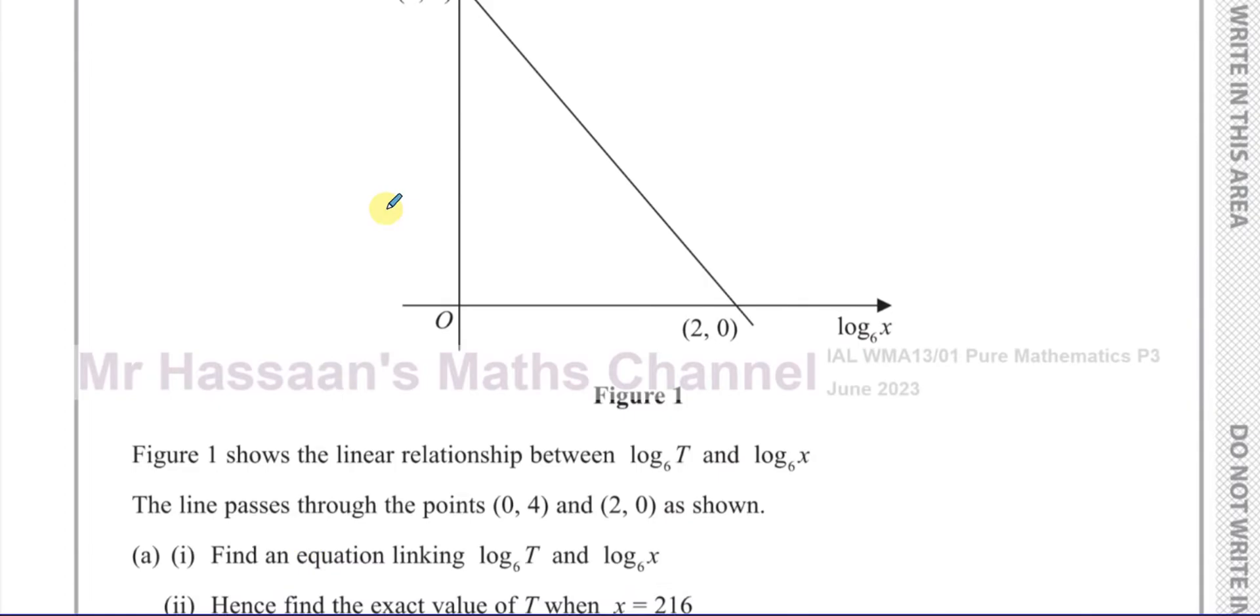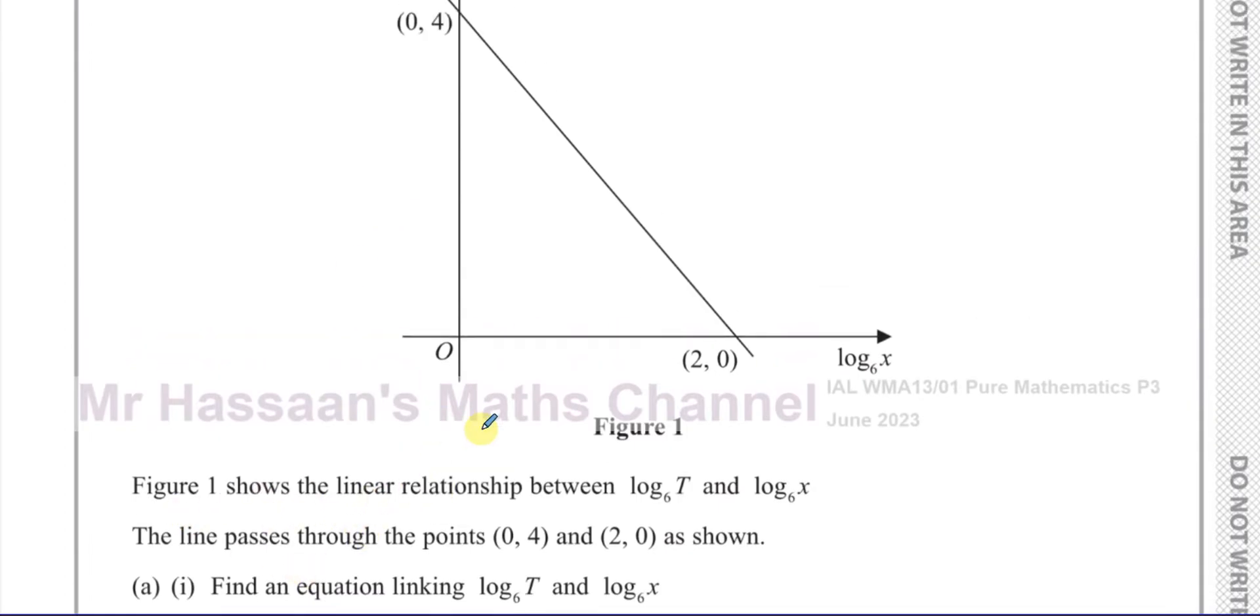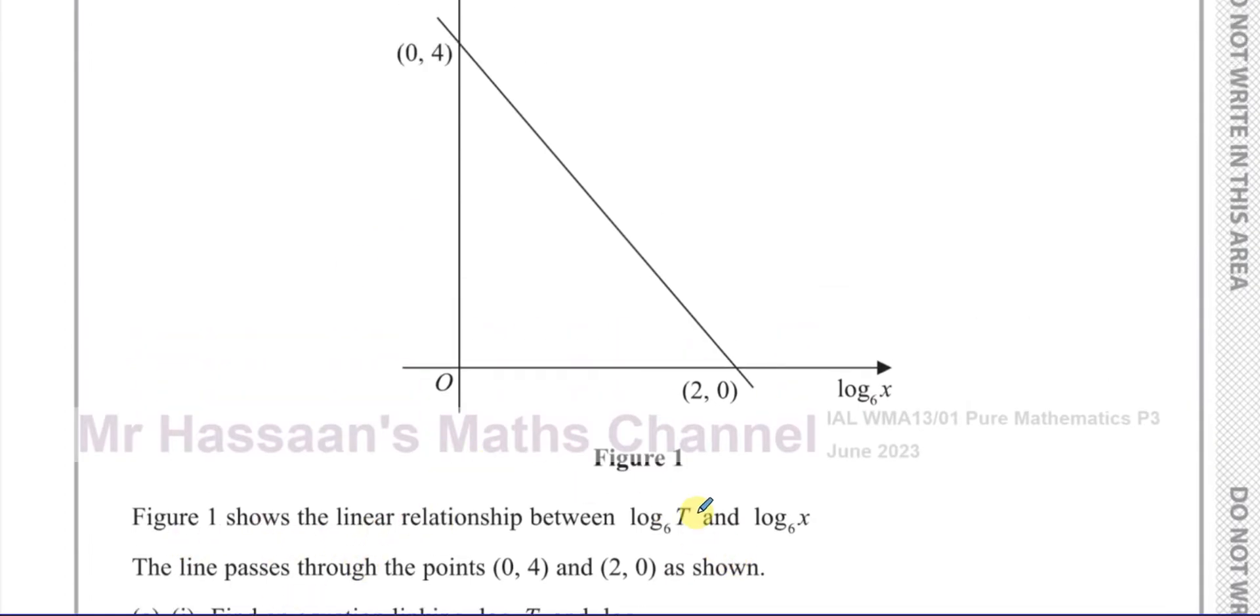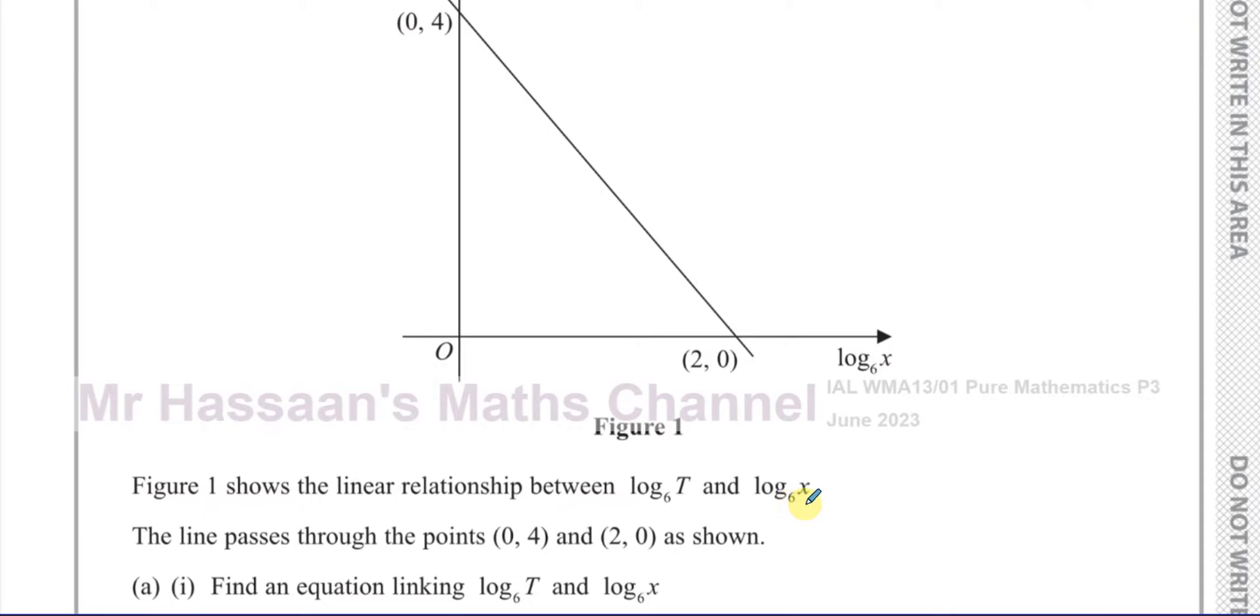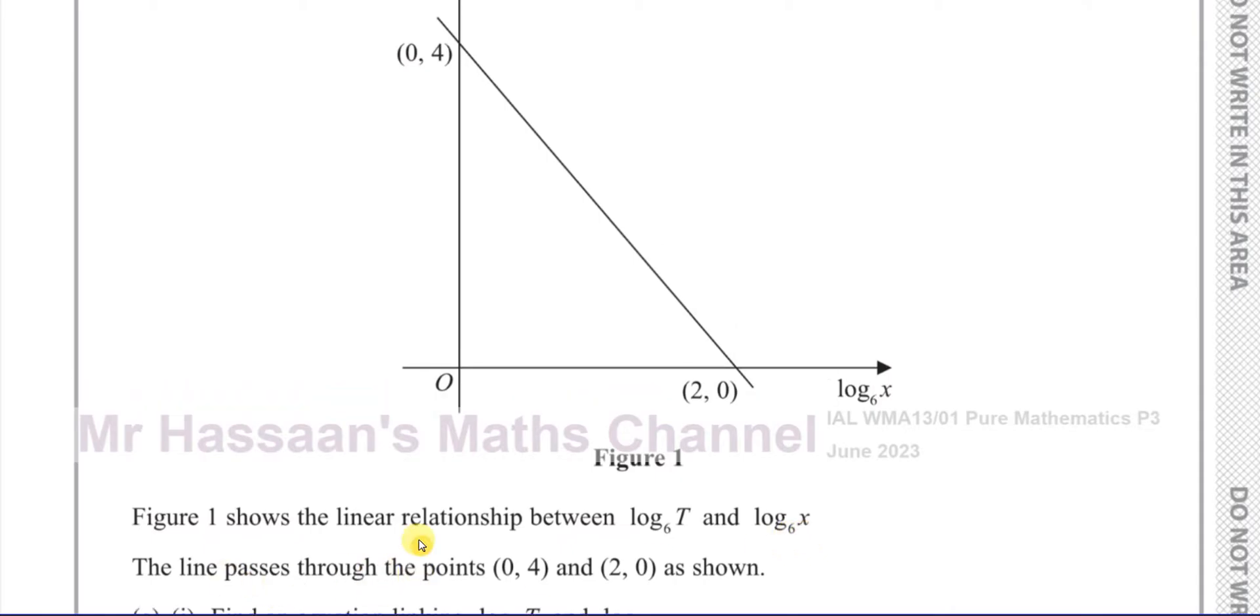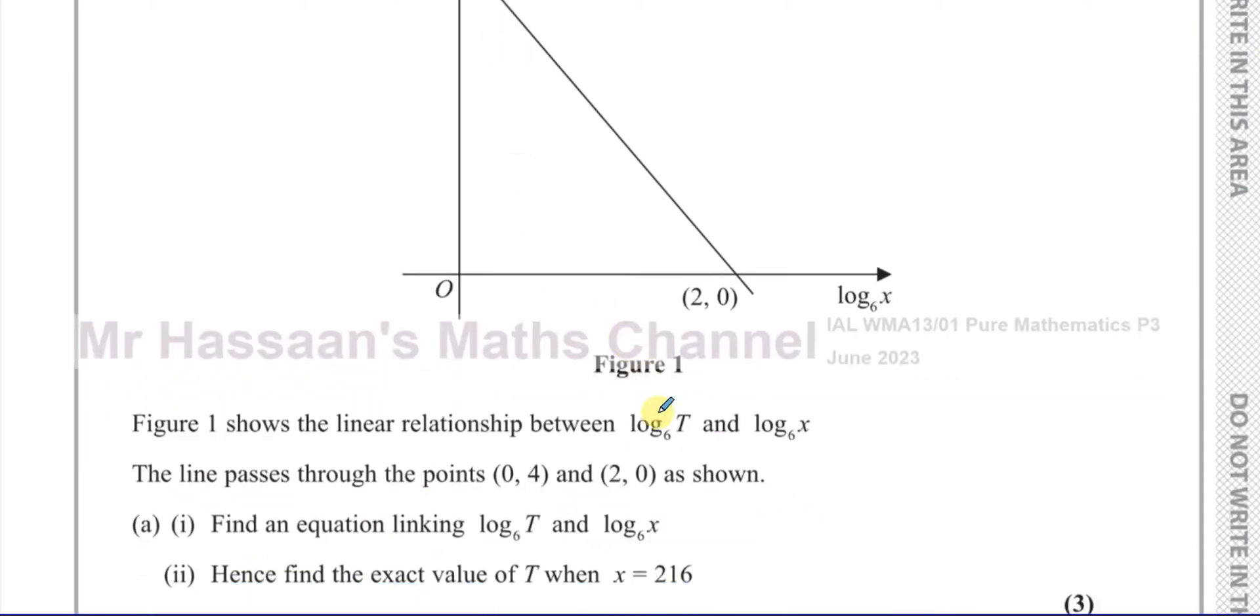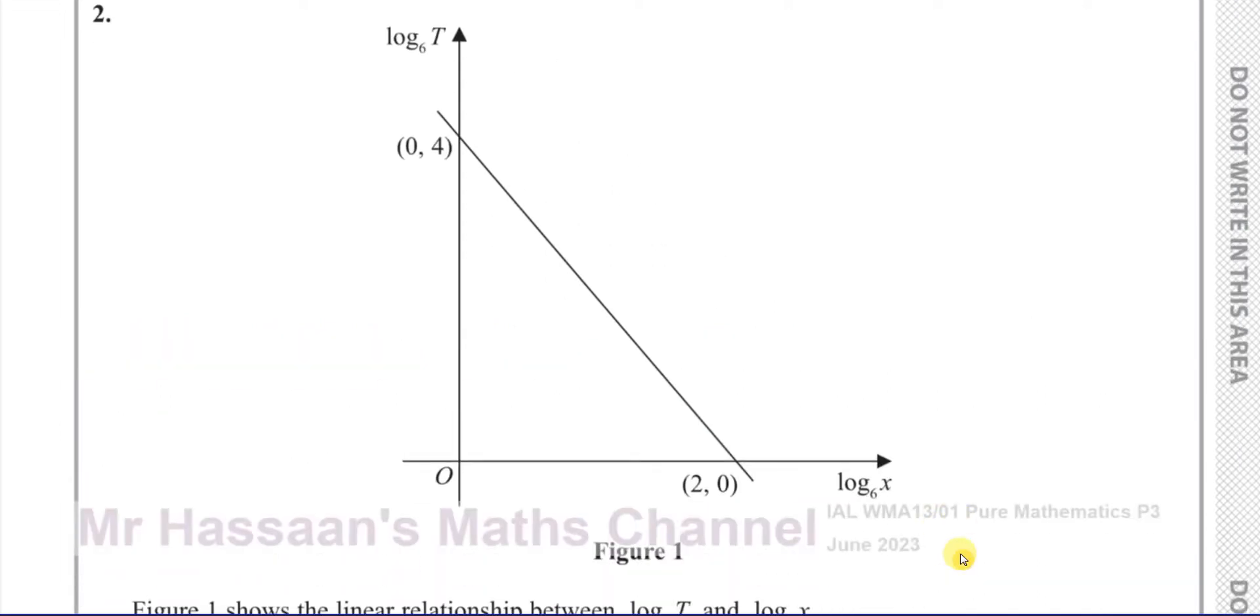It says here, figure one shows the linear relationship between log to the base 6 of T and log to the base 6 of X. The line passes through the points 0, 4 and 2, 0 as shown. We got to find an equation linking log base 6 T and log base 6 X. What we see here is a straight line, and we have the Y-intercept and the X-intercept. We have two points on the line.